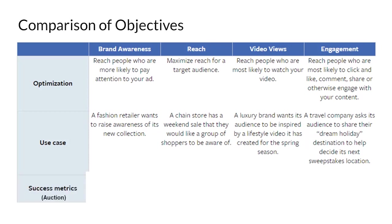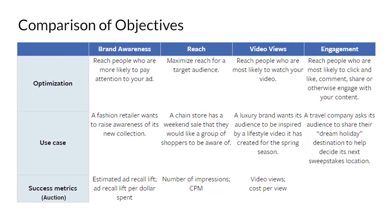For each campaign objective there are specific metrics to measure performance. For brand awareness, we use estimated ad recall lift. For reach, you measure the number of impressions, measured by CPM — cost per mille — which is the amount spent for showing one thousand impressions of your ad. For video views, you use video views as the metric and measure cost per view. For engagement, you use cost per click as the metric.